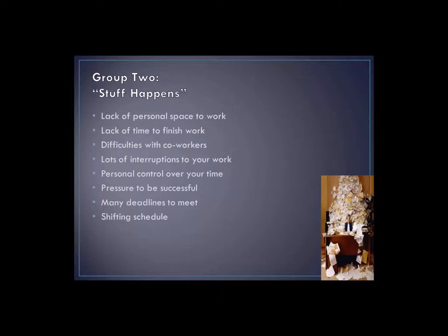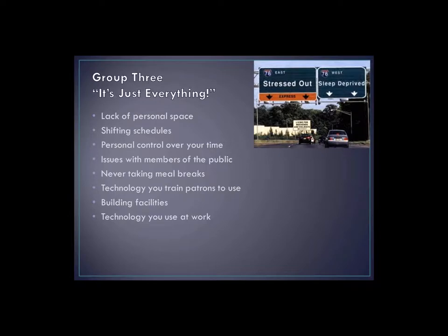The next group was stressed by work-related issues: lots of interruptions, shifting schedules, many deadlines to meet. It wasn't the people — it was the administrative side. Again, knowing this means libraries could take specific steps to solve that. The third group — my heart broke a little here — these people were just stressed about everything: people, administrative stuff, technology. Knowing that you have people in your organization at this level of stress might lead you to larger steps to help them, like referring them to an EAP. Now you know.